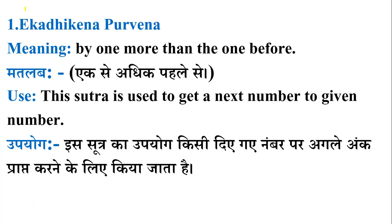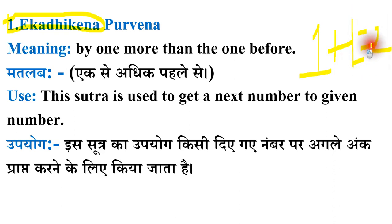I'll use a highlighter only. First of all you should focus on what is the meaning of this sutra or formula. It is called Ek Adhiken Purbena — a Sanskrit name. The English meaning is 'by one more than the one before.' In Hindi: Ek Se Adhik Pehle Se. So if a number is 1, according to this formula you add one, so it becomes 2.